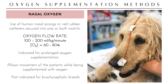Nasal oxygen is not indicated for brachycephalic breeds because their short noses make catheter placement difficult and they tend to mouth-breathe rather than breathe through their nostrils. Even if a nasal catheter is successfully placed, it may not be effective since these breeds rely on opening their mouths to breathe. Rhinoplasty to enlarge the external nares is not routinely performed.